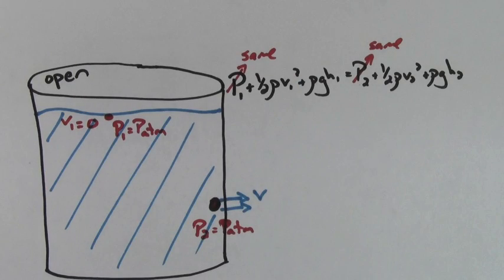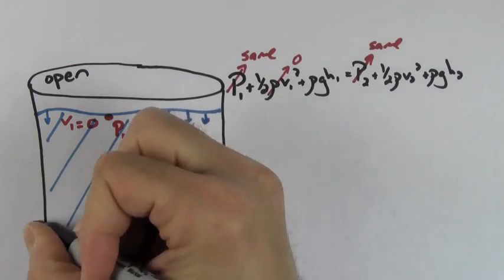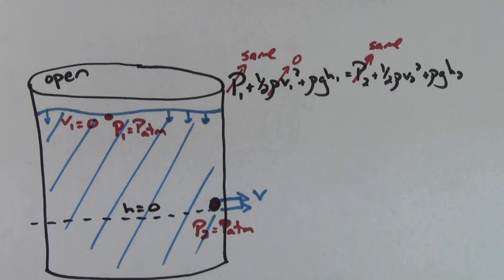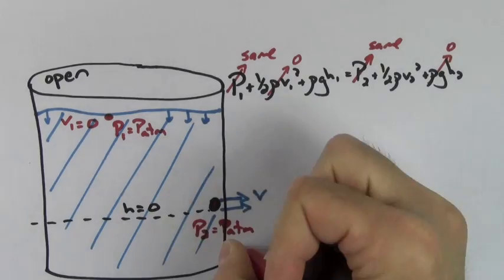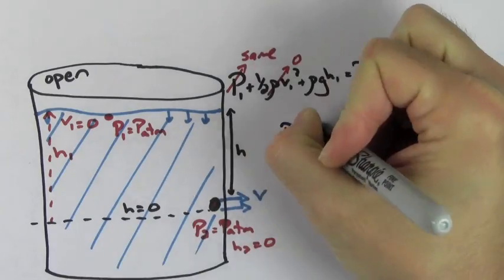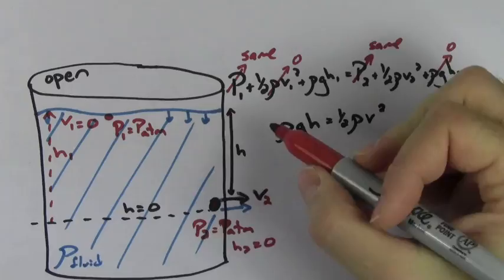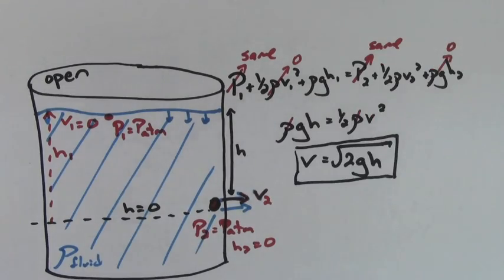Since the pressure at point 1 and point 2 are the same, we can cross them out. The speed of the fluid at point 1 will be nearly 0 if we assume that the water level is not dropping rapidly. We always get to choose the arbitrary point where h will equal 0, so we can choose that at point 2. This makes H2 zero. H1 is going to be the height of the surface level of the water above the point where the water is flowing out. This just leaves us with rho g h equals one half rho V squared. The rho refers to the density of the water. You can solve this for the speed of the water and you just get root 2 g h.